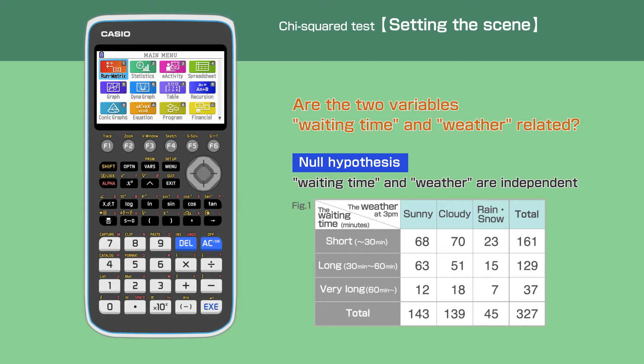The waiting time is also divided into 3 categories: short, long, or very long.